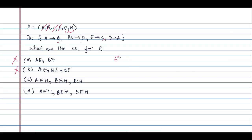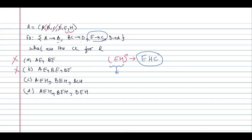Now let us take the closure of EH. With E we get E itself (trivial); with E we can determine C; with H we cannot determine anything else. Therefore EH closure is only {E, H, C}. We are not able to determine anything else, meaning EH alone can never be a candidate key. We need to add other attributes to EH.